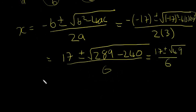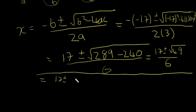And this is going to be 17 plus or minus the square root of 49 divided by 6. Equal to 17 plus or minus - so I'm just going to draw a line over there so I don't get confused - 17 plus or minus the square root of 49 is 7, all divided by 6.